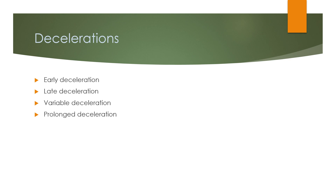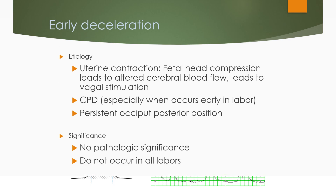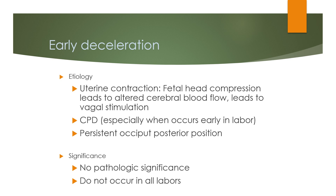Decelerations include early, late, variable, and prolonged types. Early deceleration is defined as a gradual decrease in fetal heart rate with onset to nadir of more than 30 seconds, with the nadir at the time of the uterine contraction peak, uniform mirror image shape, and recovery within the contraction. It rarely drops below 110 beats per minute or 30 beats below baseline. Etiology is fetal head compression leading to altered cerebral blood flow and vagal stimulation; associated with CPD in early labor and persistent occiput posterior position. It has no pathological significance and does not occur in all labors.